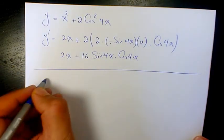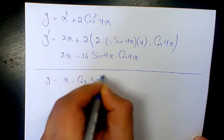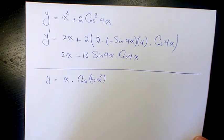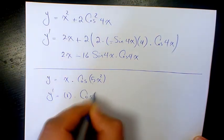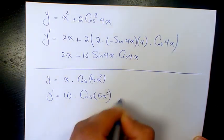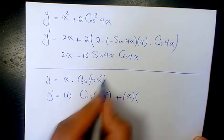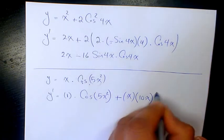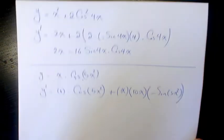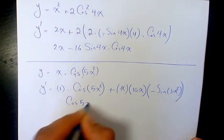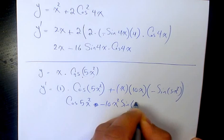Next example: y equals x times cosine 5x squared. We need to use the product rule. The derivative of the first times the second is 1 times cosine 5x squared, plus x times the derivative of cosine 5x squared. The derivative of 5x squared is 10x, times negative sine 5x squared. Simplified: cosine 5x squared minus 10x squared sine 5x squared. That's the final answer.